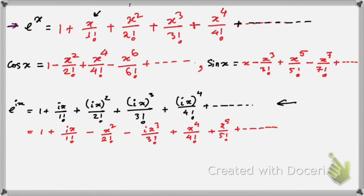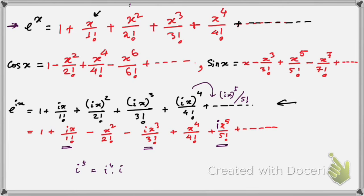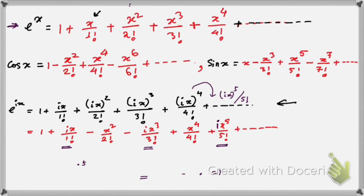Now if you observe the terms, you can take i common from the imaginary terms. Taking i common gives: i times (x by factorial 1 minus x cubed by factorial 3 plus x to the power 5 by factorial 5, and so on). The term ix to the power 5 by factorial 5 comes from i to the power 5, since i squared whole squared times i equals plus 1 times i, which is i.